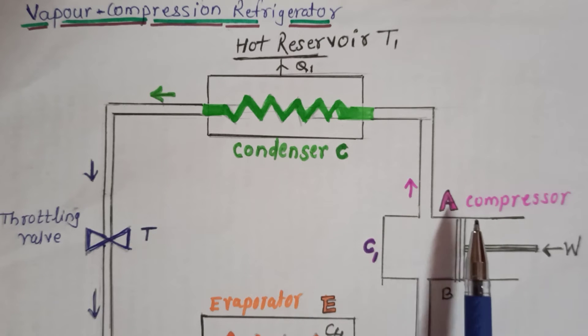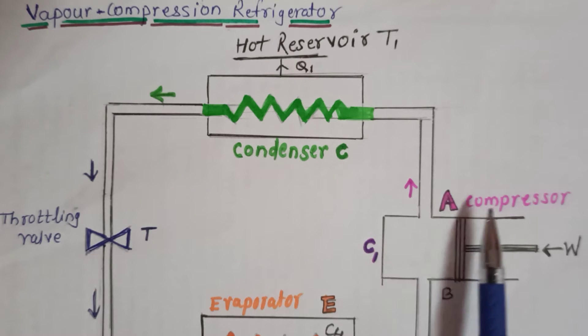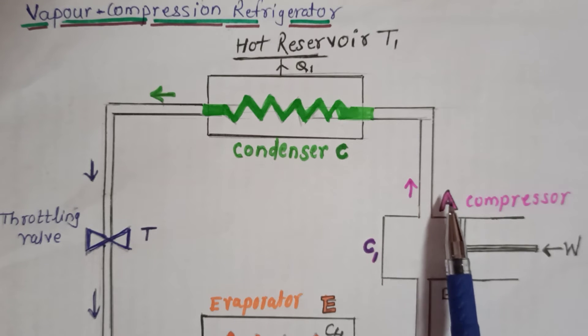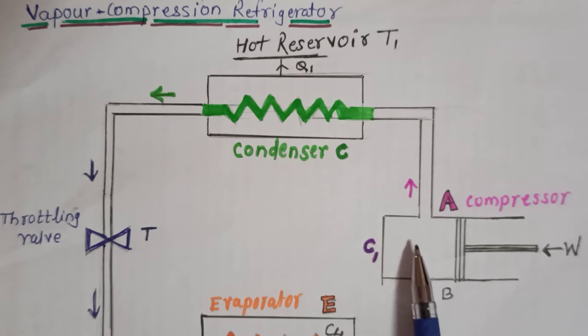Compressor C1. This is the compressor. It is fitted with an electrically driven piston. This compressor has two valves A and B. Inside this compressor we take a gas, sulfur dioxide or ammonia. This gas is compressed adiabatically inside this compressor.